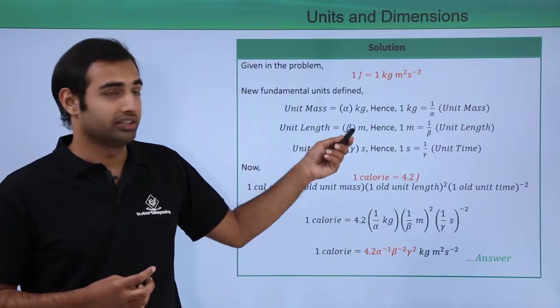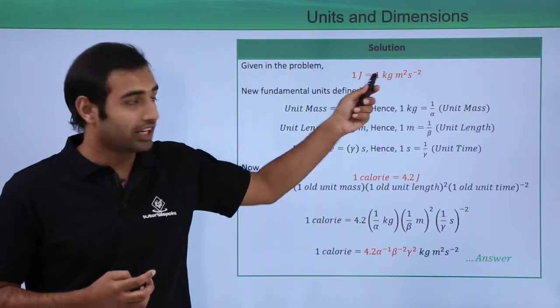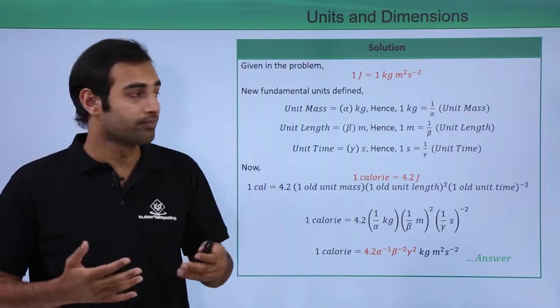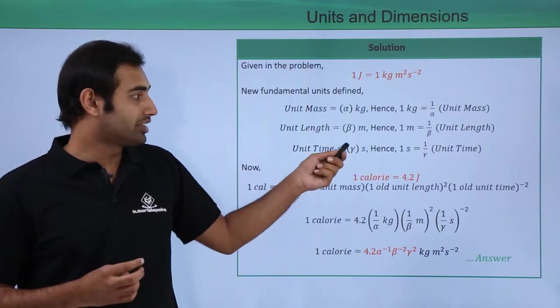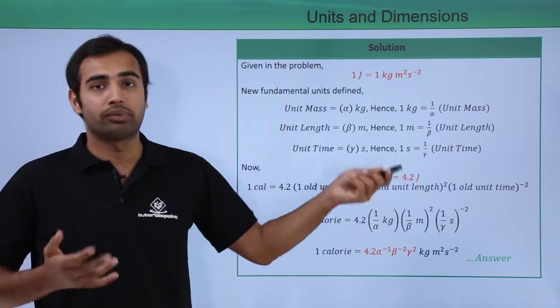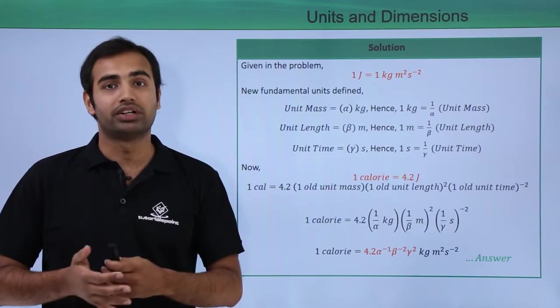Similarly, if unit length is beta meters, 1 meter of length that I have to use over here can be defined as 1 by beta times the new unit length and unit time which is gamma second, if this is a new standard, then 1 second can be defined as 1 by gamma times the new unit time.